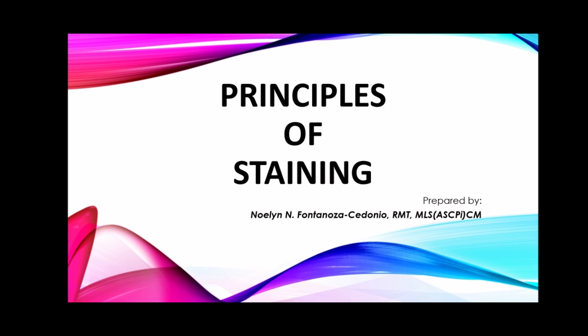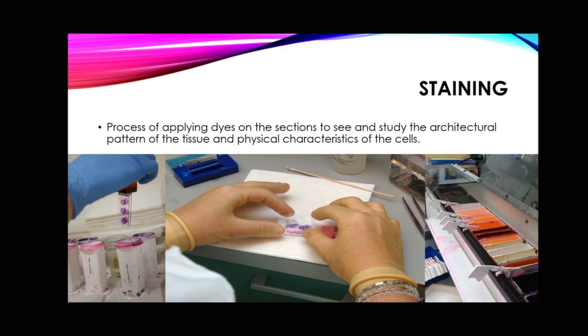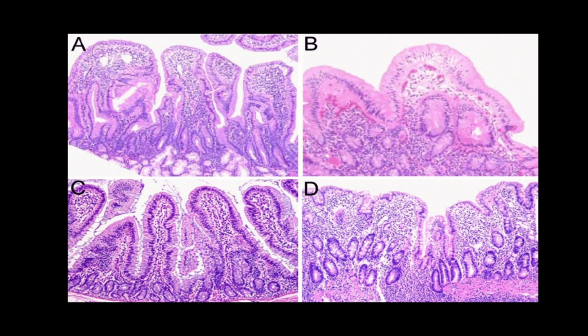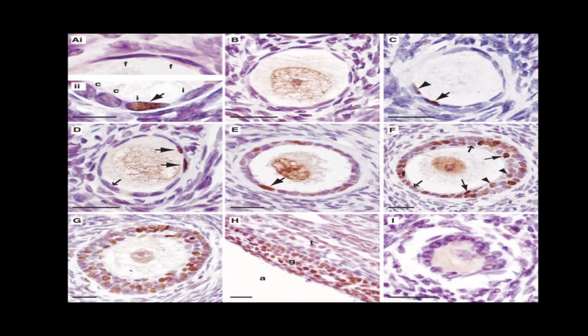Staining is the process of applying dyes on sections to see and study the architectural pattern of the tissue and physical characteristics of the cells. This is made possible because different tissues and cells display varying affinities for most dyes and stains, so that they become more visible, morphologic changes are more easily identified, and the presence or absence of disease process can be established.